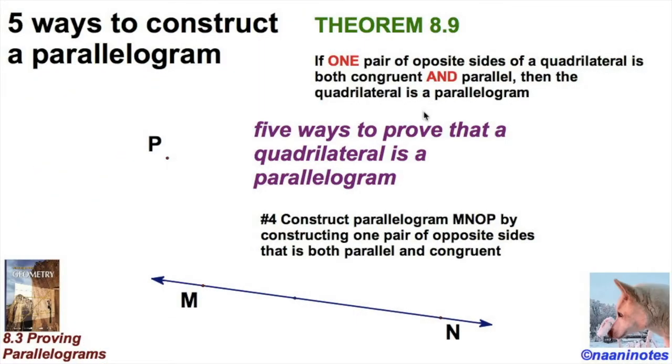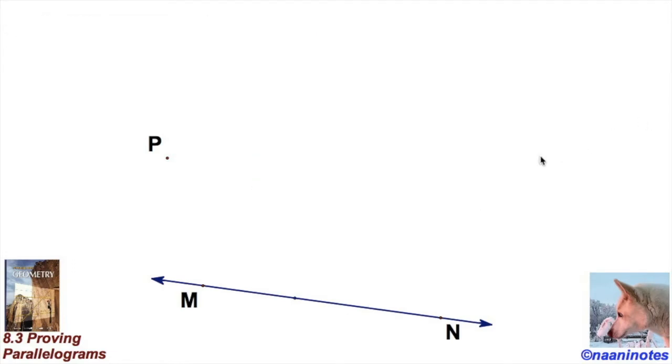And welcome to Naughty Notes. This is the fourth in our five-part series of compass constructions of a parallelogram to illustrate the five ways to prove that a quadrilateral is a parallelogram in our textbook down in the left corner, McDougall-Littell. Let's get to it because this one's not that hard.